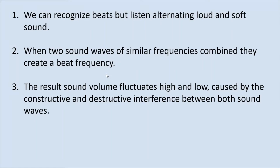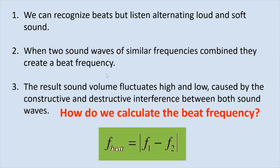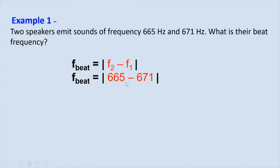So the question is: how can we measure the beat frequency? We have a formula to calculate the beat frequency as the absolute value of the difference between both frequencies. For our first example: two speakers emit sounds at 665 Hz and 671 Hz — they are very close to each other. What is their beat frequency? Using the formula, the order doesn't matter because we take the absolute value. So 665 minus 671 gives a difference of 6 Hz. This is the beat frequency.